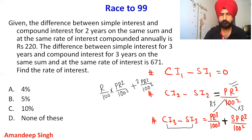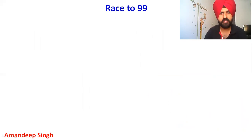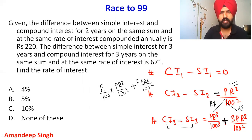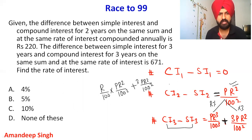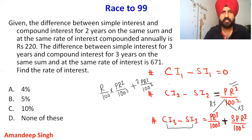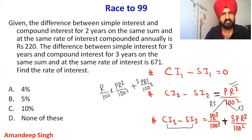One more thing to remember: in compound interest, as the rate of interest increases, the amount of interest increases in successive years. Now, to solve this question: the two-year difference is 220, and the three-year difference is 671.